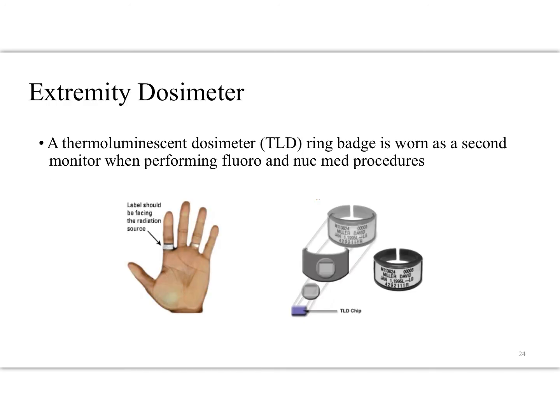Extremity dosimetry is generally done using a thermoluminescent dosimeter, or TLD. This has a special crystal inside that, when exposed to radiation, changes its crystal structure and can be read out by heat. We heat it up, it gives off light, and that is plotted against a glow curve to determine what type of radiation dose was received by the extremity. We like these because they're kind of rough and tumble — if the hand is moving around a lot and getting bumped, it's not going to affect the sensitivity of the device.